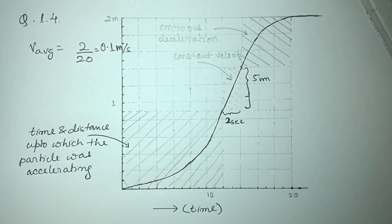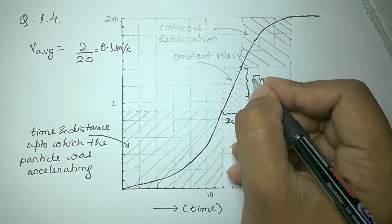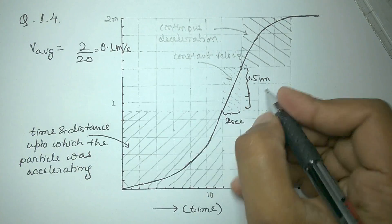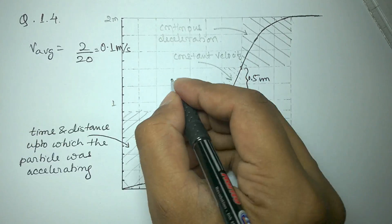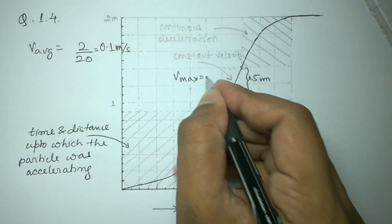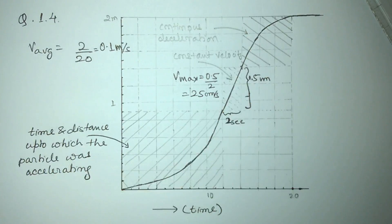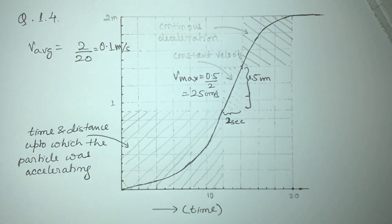To calculate the maximum velocity we can simply get the ratio of difference of the y coordinates to the x coordinates in the constant velocity zone. Since it covers 0.5 meters in 2 seconds, the maximum velocity will be 25 centimeters per second.